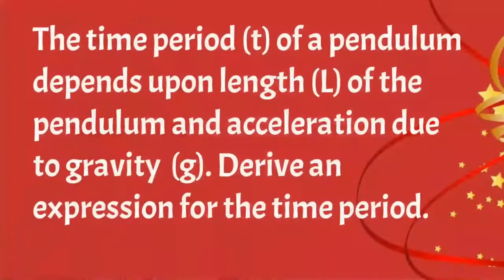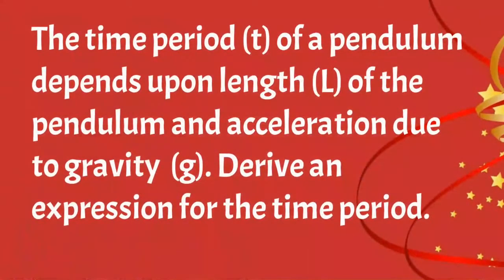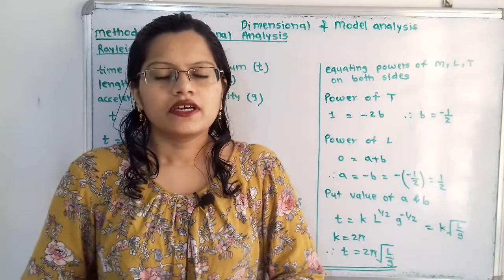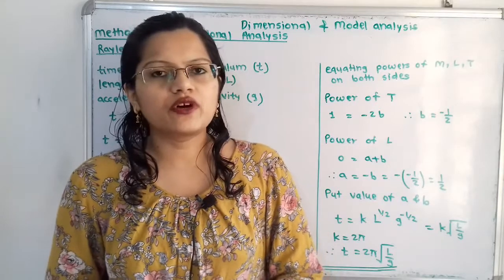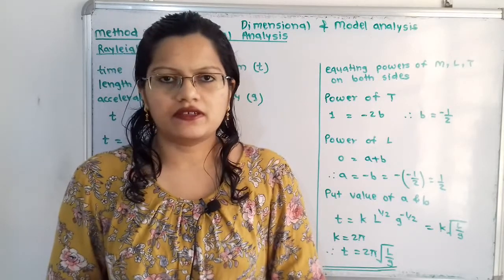First I will read what is the given problem. The time period T of a pendulum depends upon the length L of the pendulum and acceleration due to gravity G. Derive an expression for the time period. In this problem we are going to use Rayleigh's method.